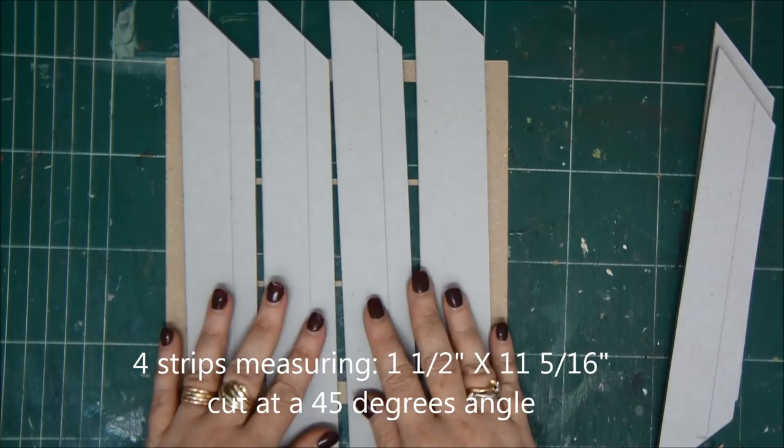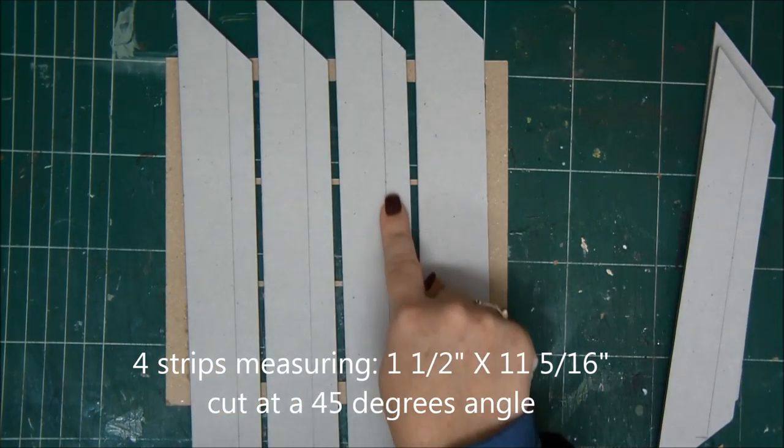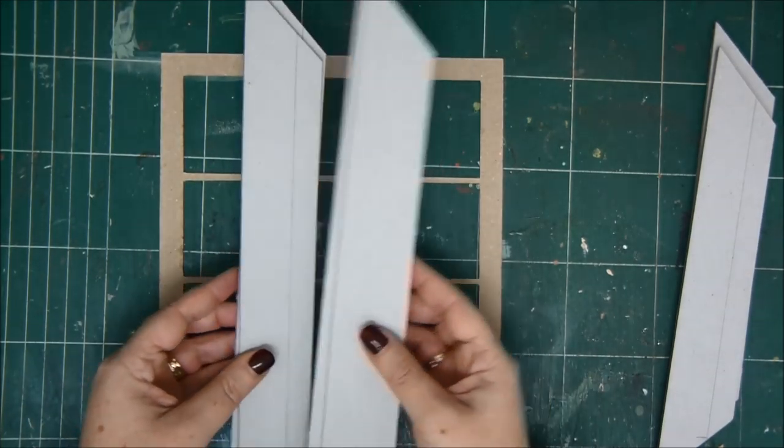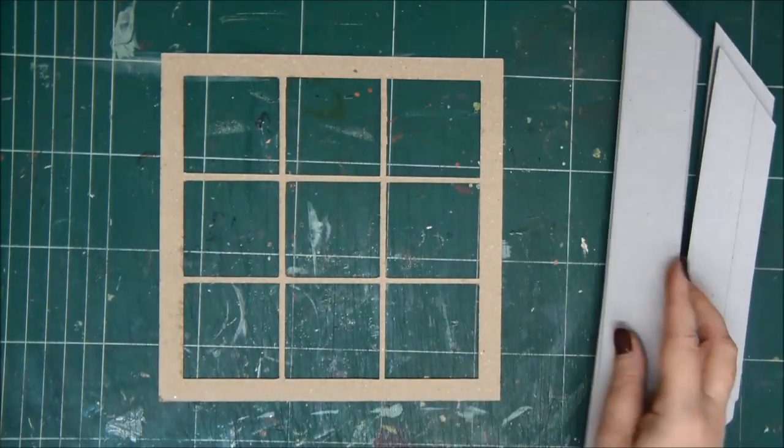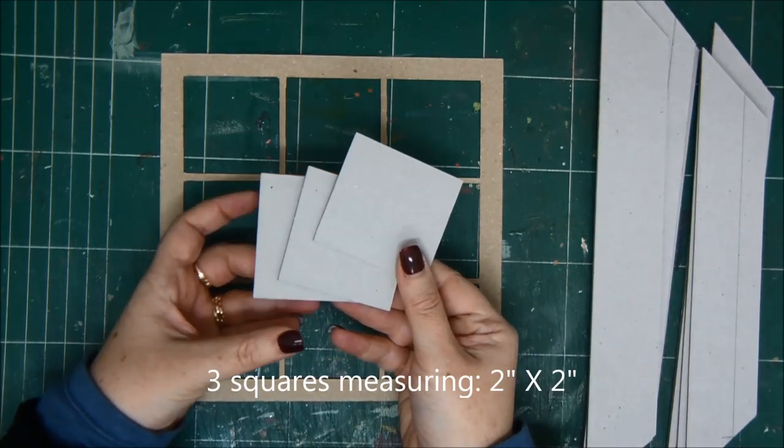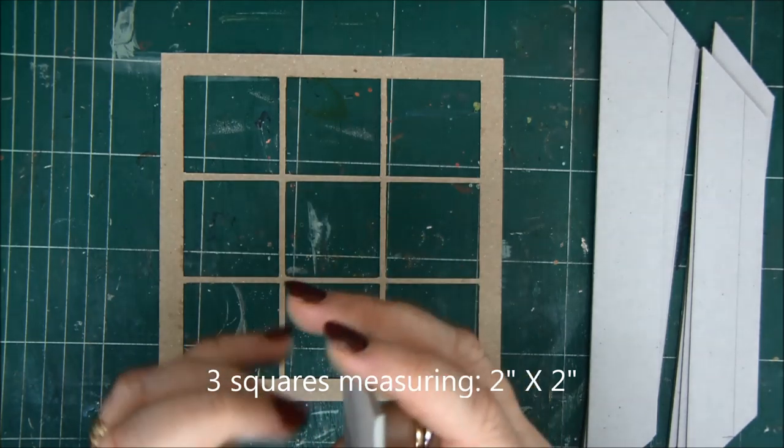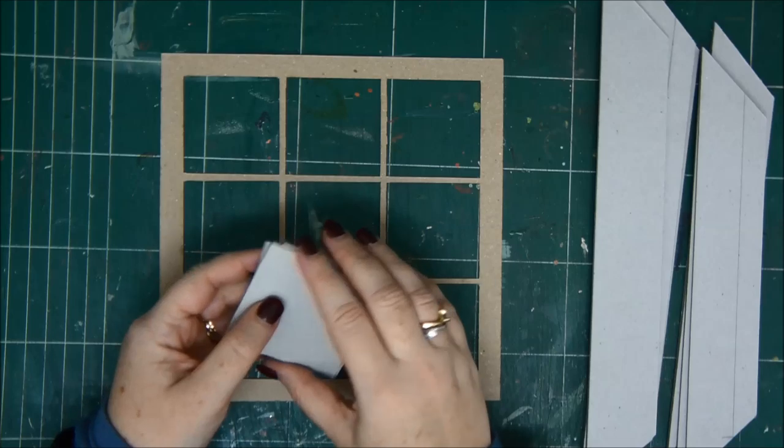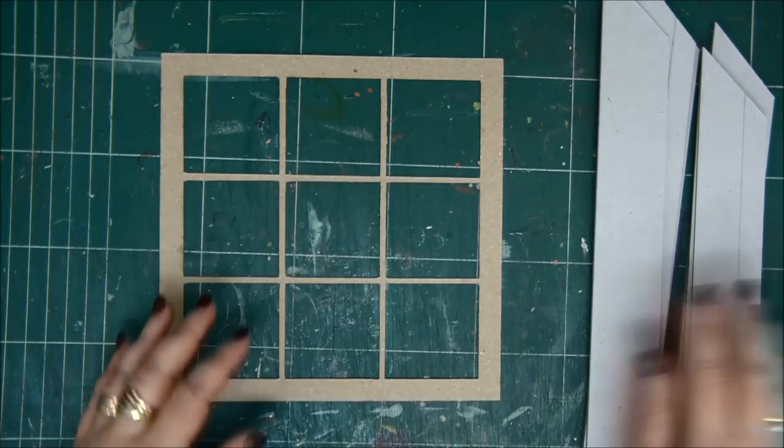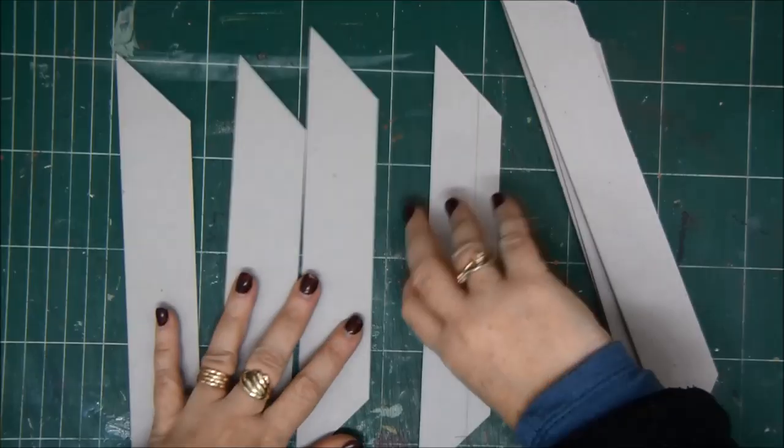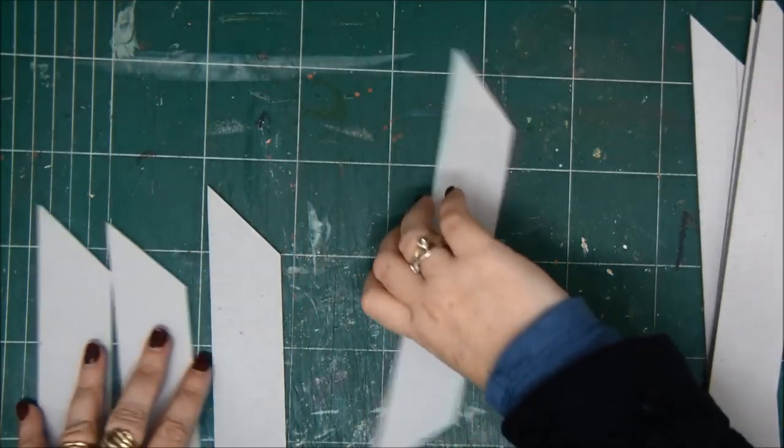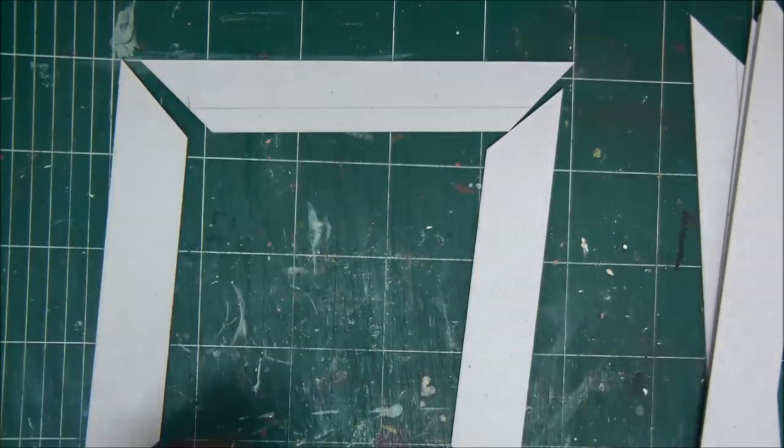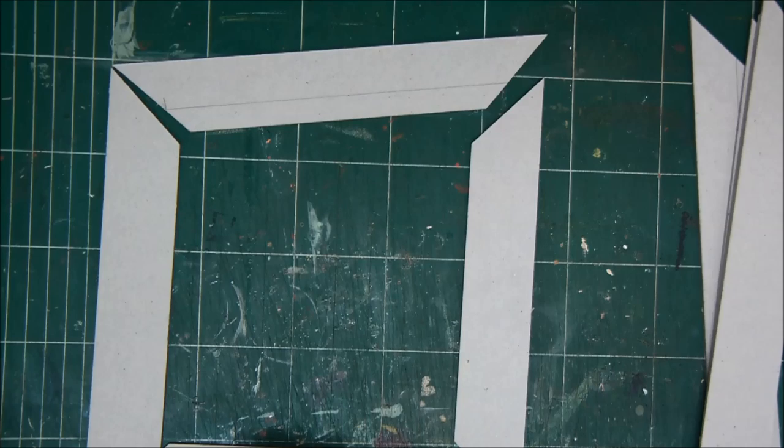You would have to cut each strip at the end at a 45 degree angle, so this way it will be really cool and nice to create the frame. Also, you would need three two by two squares. For the strips, you have to mark them half of an inch from the narrower side. You can see the marking that I made with the pencil. This is so that it will be easier later to keep everything straight.